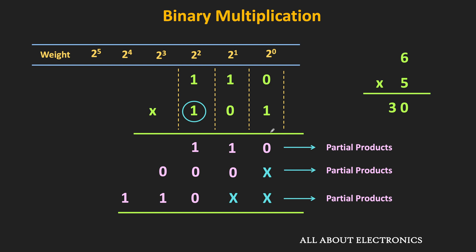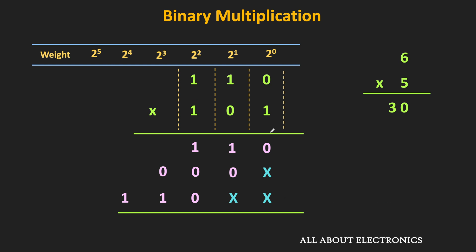Finally, once we get all the partial products, we just need to add them to get the result of the binary multiplication. So if we do column by column addition, then in the rightmost column we will have 0. In the next column we will have 1. And in the next three columns also, we will get 1. That means the product is equal to 11110. And to cross verify, converting to decimal: 16+8+4+2 = 30. That means our binary multiplication is correct.